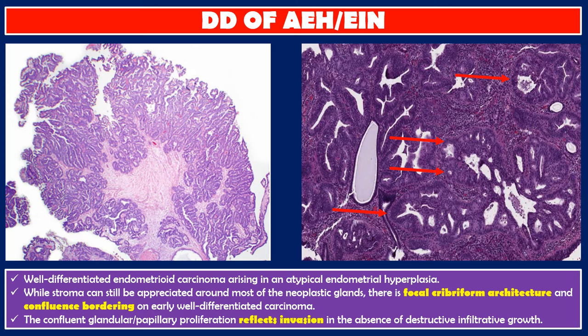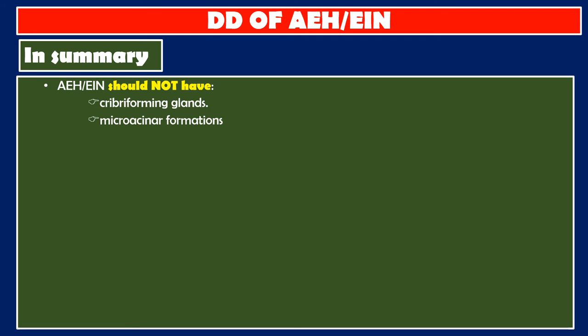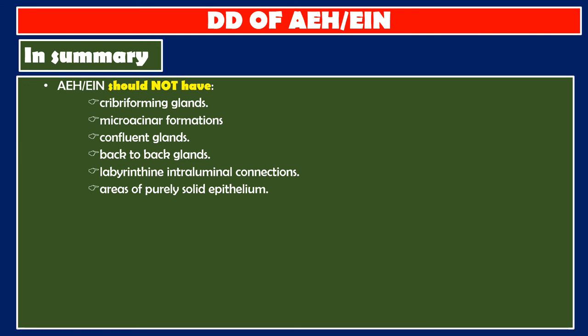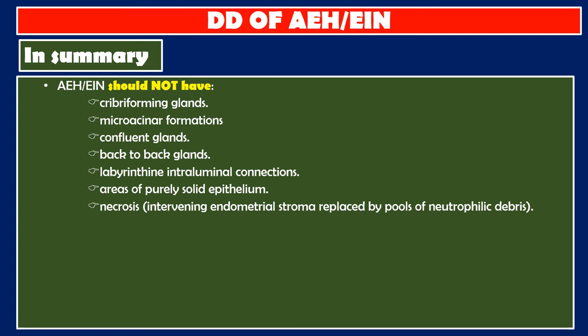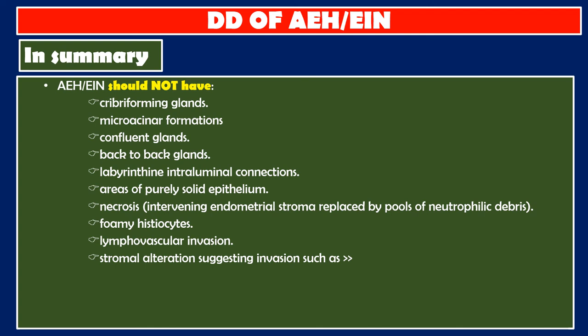In summary, atypical endometrial hyperplasia and endometrioid intraepithelial neoplasia should not have any cribriform glands, microacinar formations, confluent glands, back-to-back glands, labyrinthine intraluminal connections, areas of purely solid epithelium, necrosis with intervening endometrial stroma replaced by pools of neutrophilic debris, foamy histiocytes, lymphovascular invasion, or stromal alteration suggesting invasion such as desmoplasia, myofibroblasts, edema, inflammation, or myoinvasion.